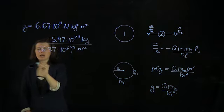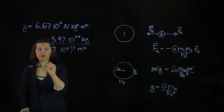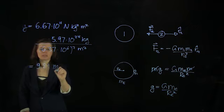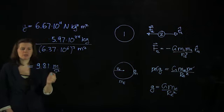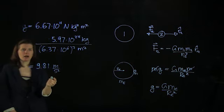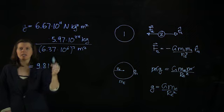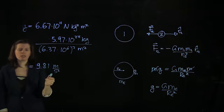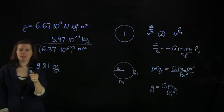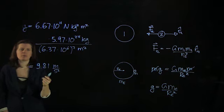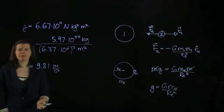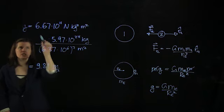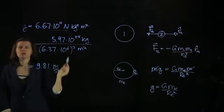If we calculate this, we get to 9.81 meter per second squared. And surely, you have seen this number before. This number can either be calculated if you know capital G, the gravitational constant, or you can determine the gravitational acceleration through an experiment. And together with the Earth mass and the Earth radius, you can actually calculate the gravitational constant there.